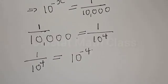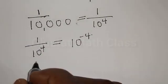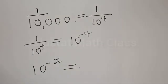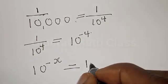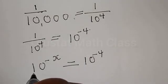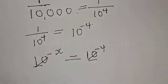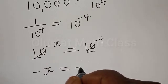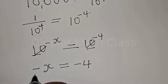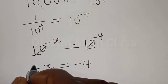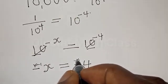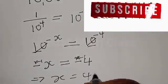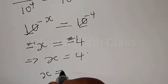1 over 10 raised to power 4 can be expressed as 10 raised to power minus 4. Therefore, substituting back into the equation, we have 10 raised to power minus s is equal to 10 raised to power minus 4. They have the same base, so the bases cancel. Therefore minus s is equal to minus 4. Multiplying all through by minus 1, we have s is equal to 4.